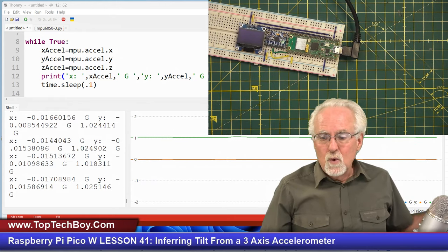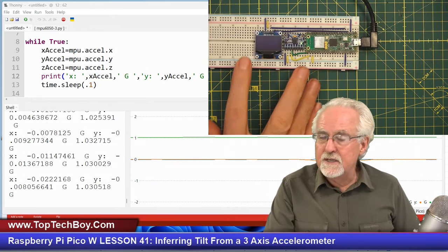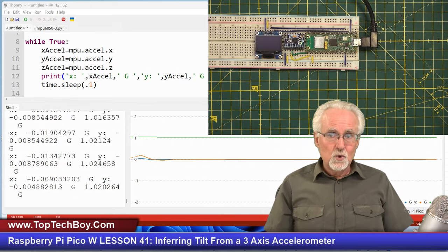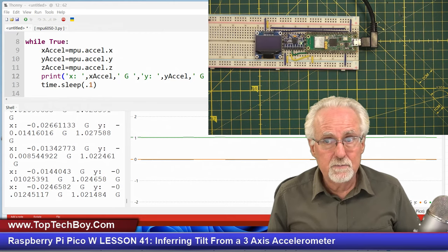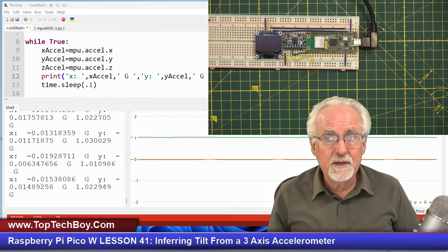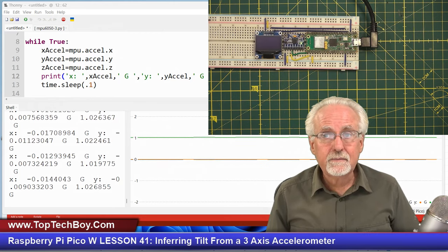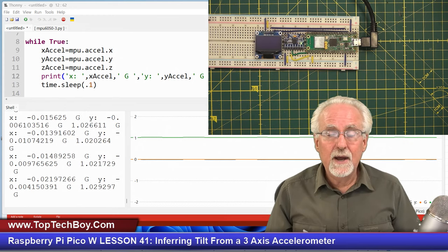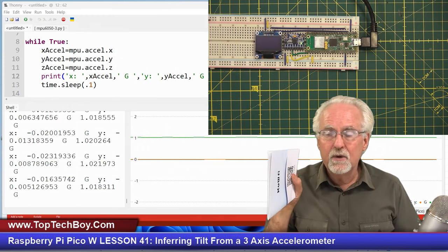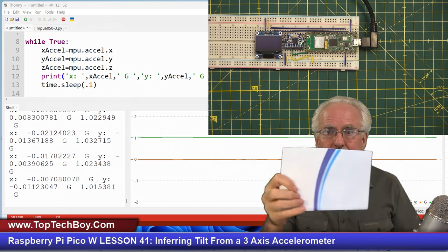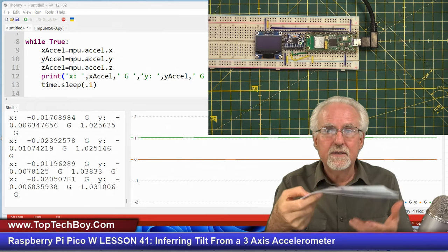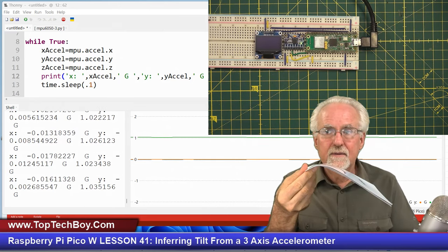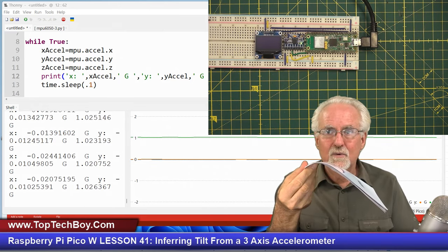Right here we have z misbehaving. Remember how we have those plates suspended by a spring? This is the y-axis plate, this is the x-axis plate, and this is the z-axis plate. What's different?